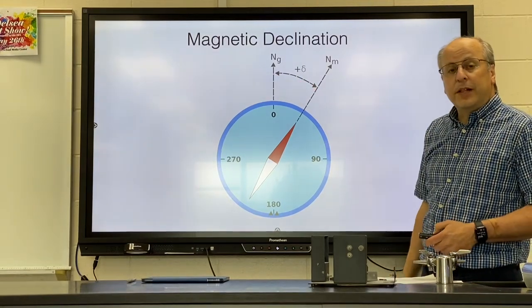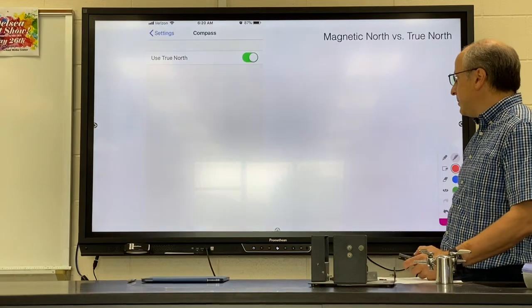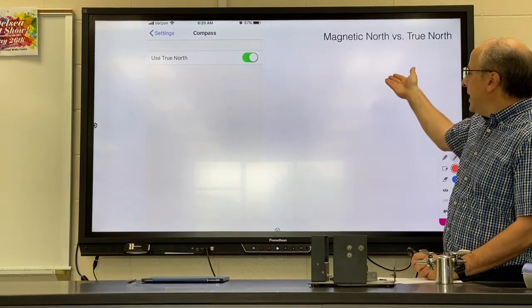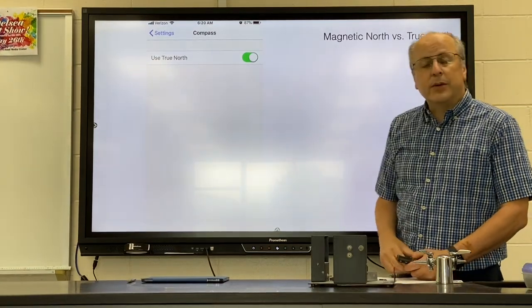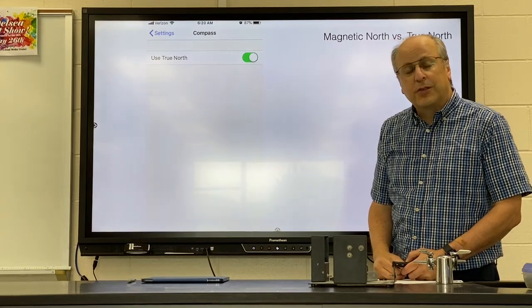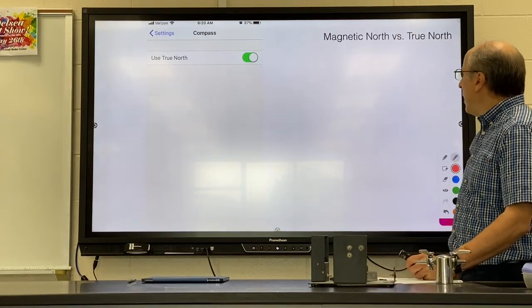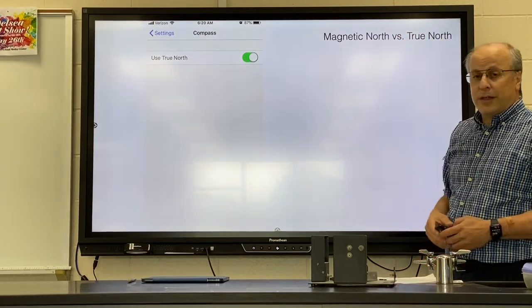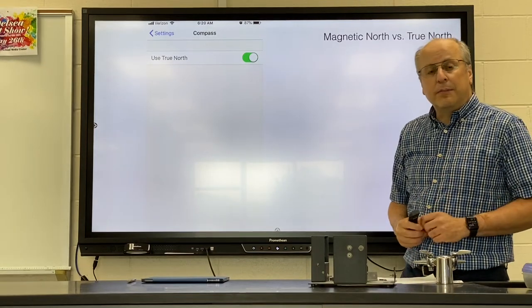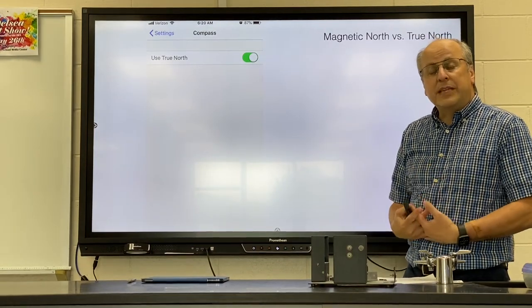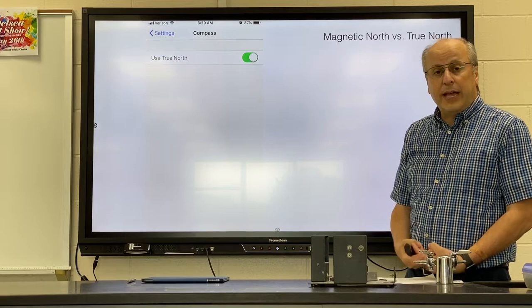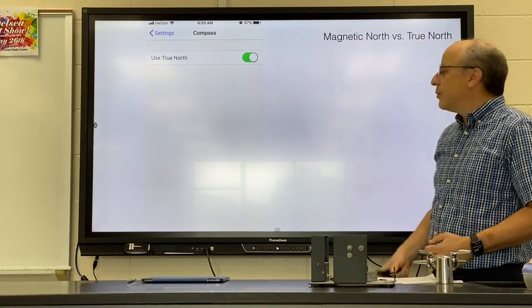Magnetic declination. Again, in Franklinville, it's about 12 degrees. You can set your phone so its compass will measure true north. Or you can have it do magnetic north. Remember, they're not the same location, and the offset will be different in different locations. Franklinville is around 12 degrees.